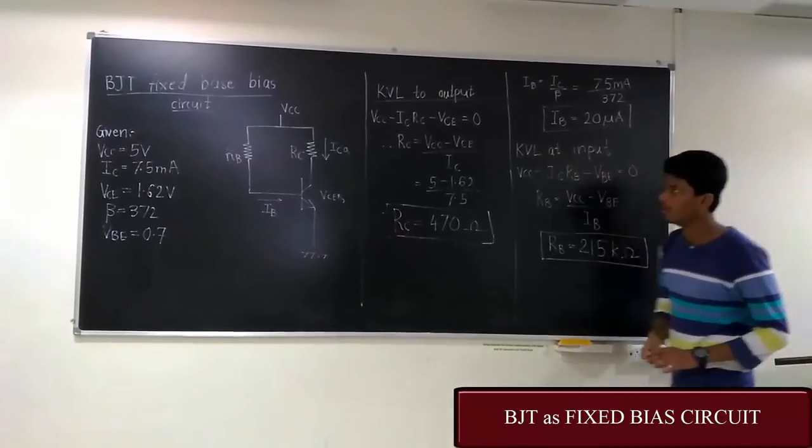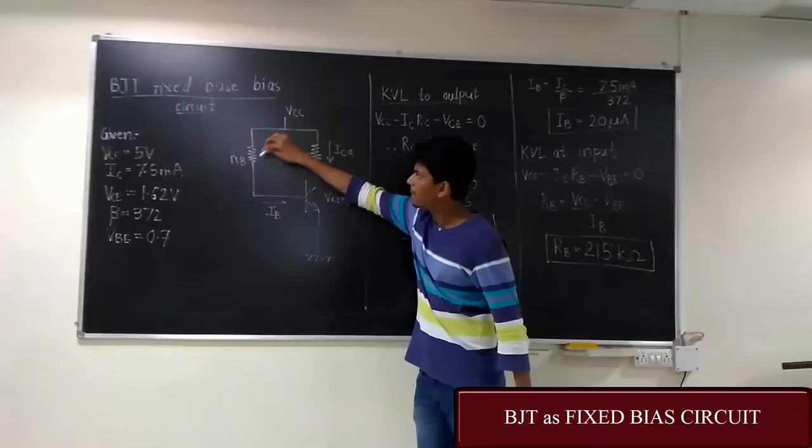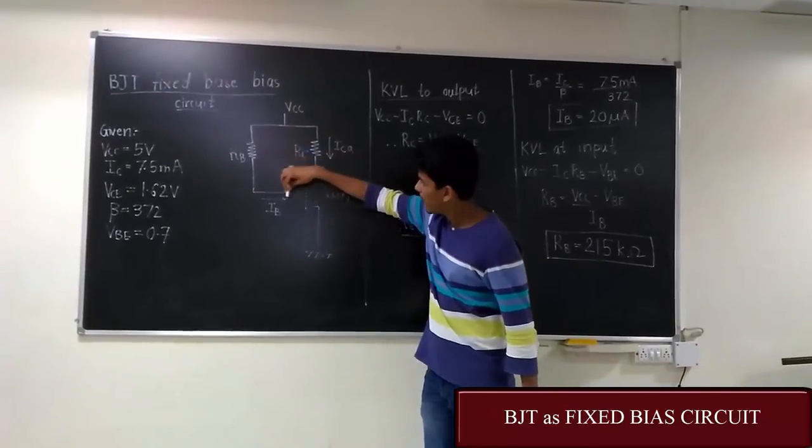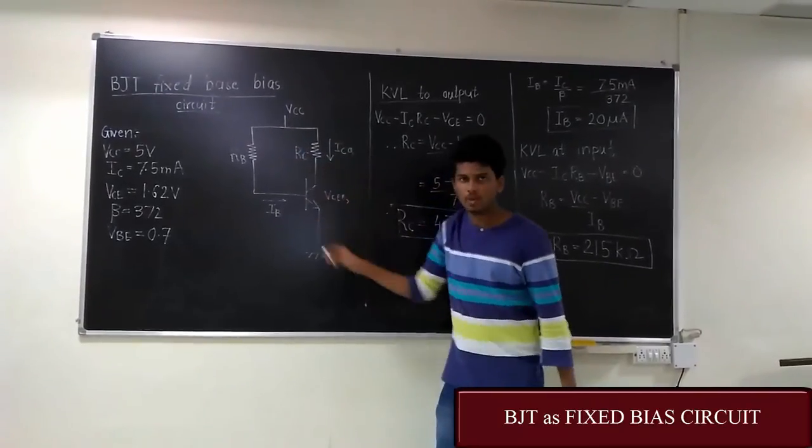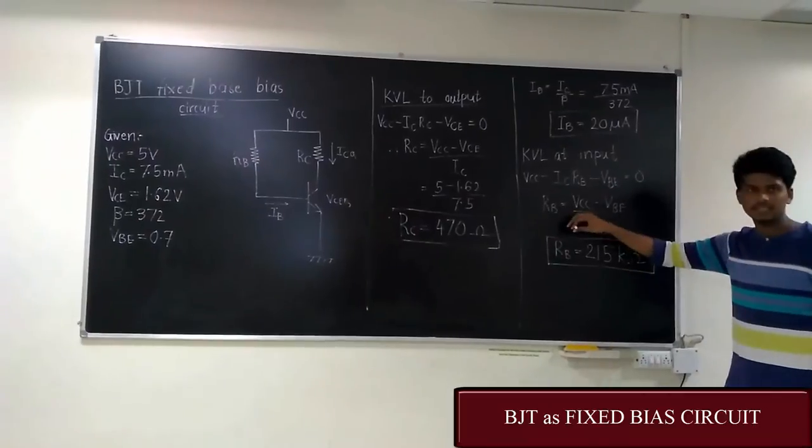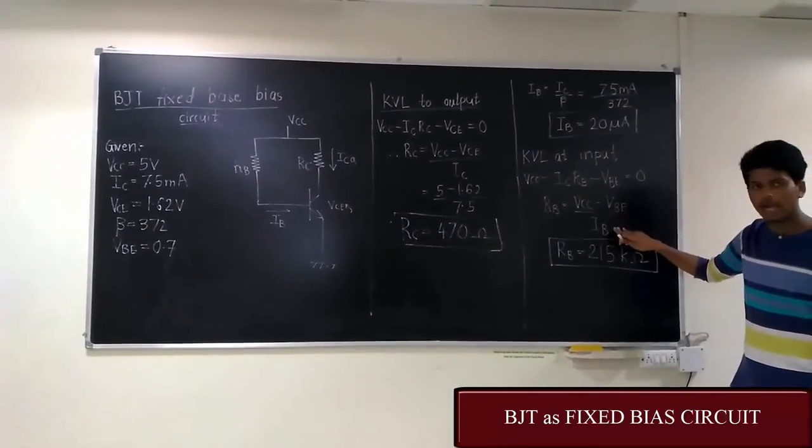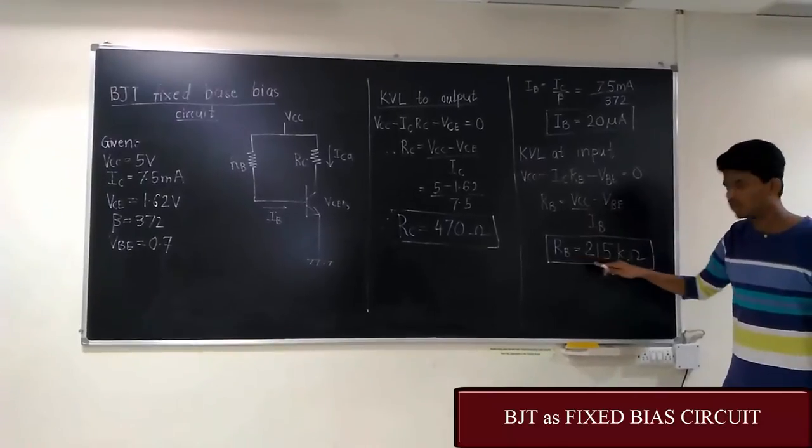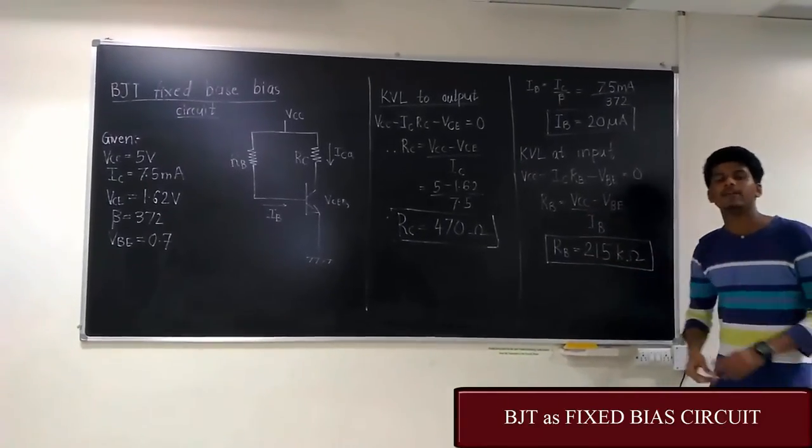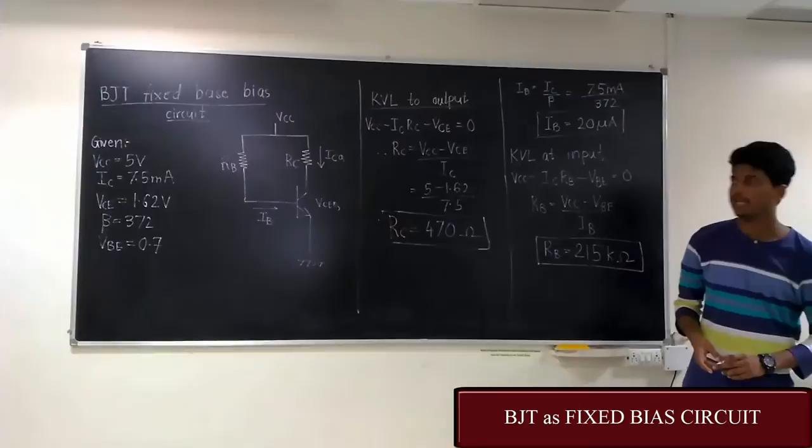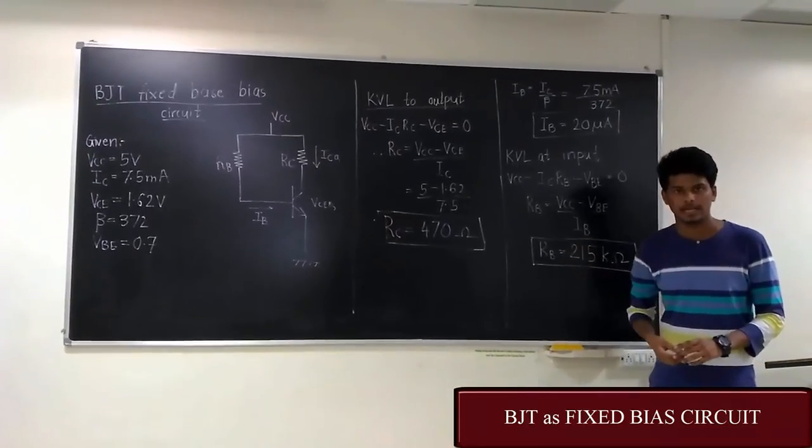Now applying KVL at the input we get VCC minus IB*RB minus VBE is equal to 0. That gives us RB is equal to VCC minus VBE upon IB. That is RB is equal to 215 kOhms. Now let us look at the breadboard implementation and check whether our designing values are correct.